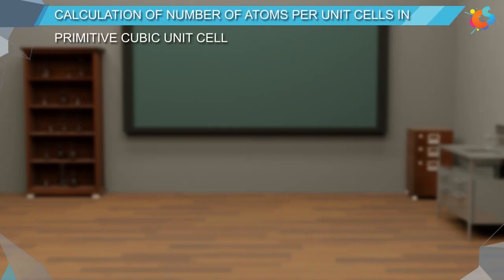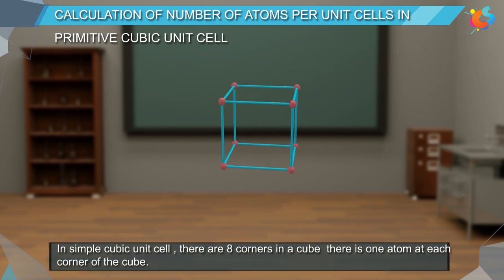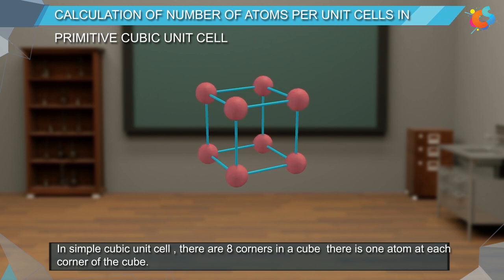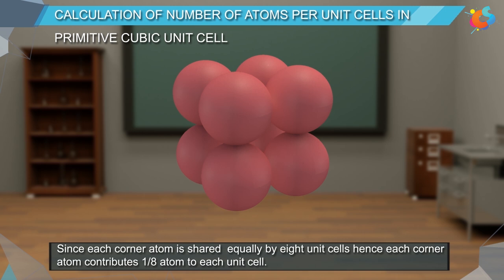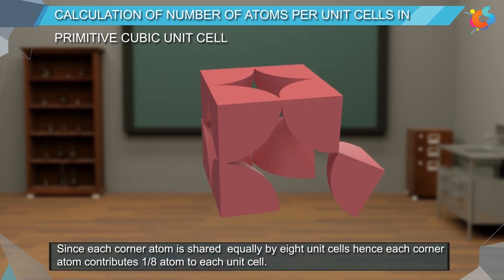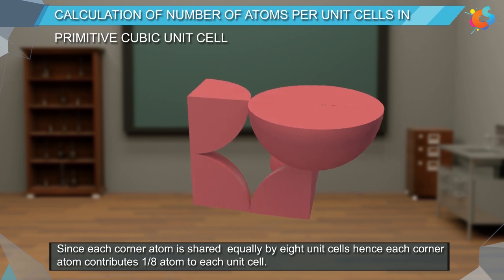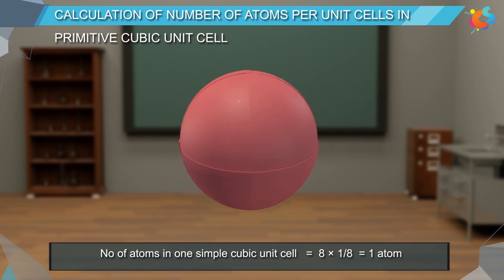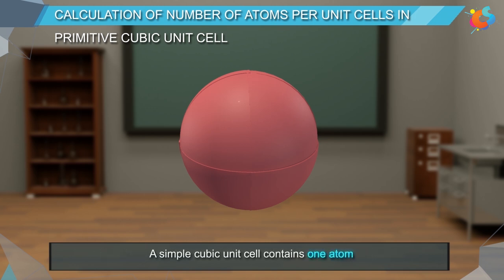Calculation of number of atoms per unit cell in a primitive cubic unit cell (Simple Cube). In a simple cubic unit cell, there are eight corners in a cube, with one atom at each corner. Since each corner atom is shared equally by eight unit cells, each corner atom contributes one-eighth atom to each unit cell. The number of atoms in one simple cubic unit cell is equal to 8 × 1/8, which equals one atom. A simple cubic unit cell contains one atom.